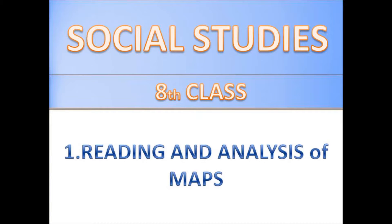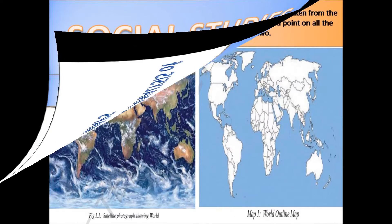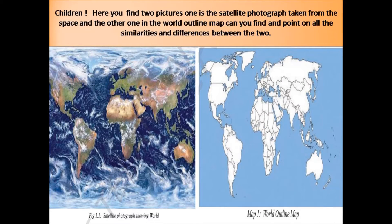Hello children, how are you all? Please stay at home and stay safe. Today we are going to learn reading and analysis of maps sitting at your home comfortably. Here you find two pictures: one is the satellite photograph of the world taken from space, and the other one is the world outline map. Can you find and point out all the similarities and differences between the two?